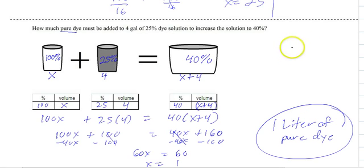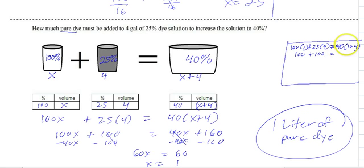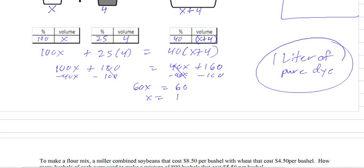But we still need to check it. So we do 100 times 1 plus 25 times 4 equals 40 times 1 plus 4, which is 5. So that's 100 plus 100 equals 40 times 5, which is 200. And it checks out. And there you go. That's the main idea.